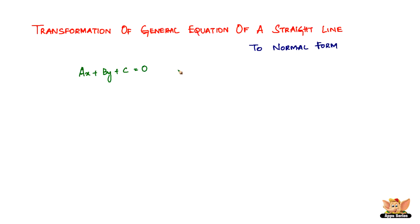We have the normal form as x cos α plus y sin α equals p. Alpha is the angle that the perpendicular line makes with the x-axis, and p is the length of the perpendicular line — the perpendicular drawn to the straight line whose equation we are talking about.